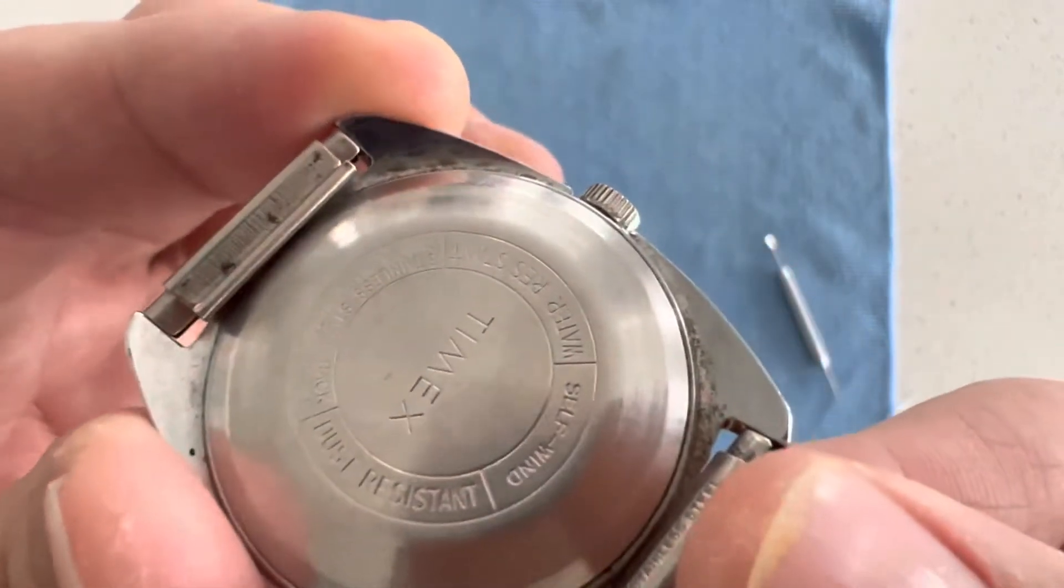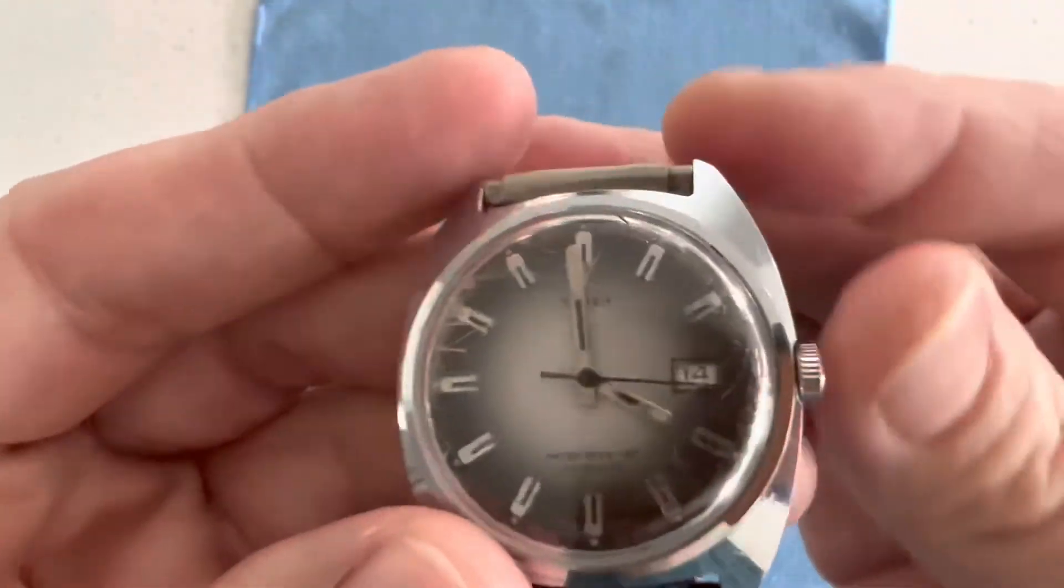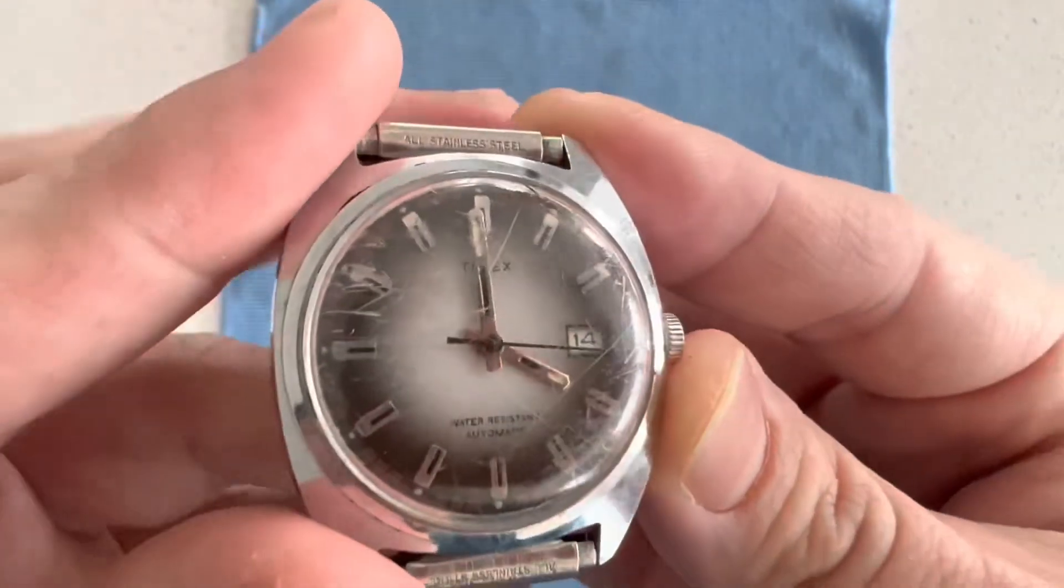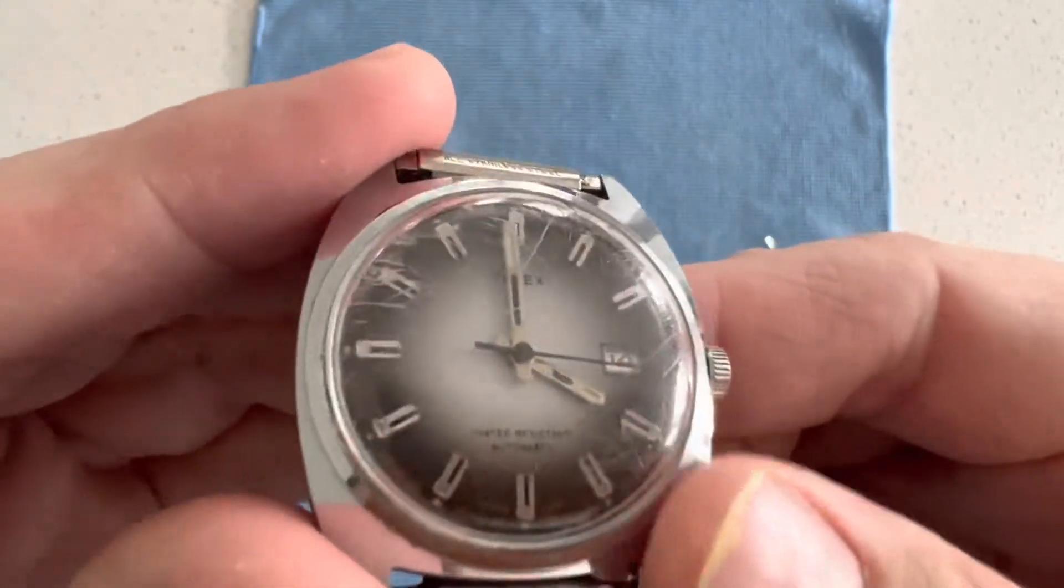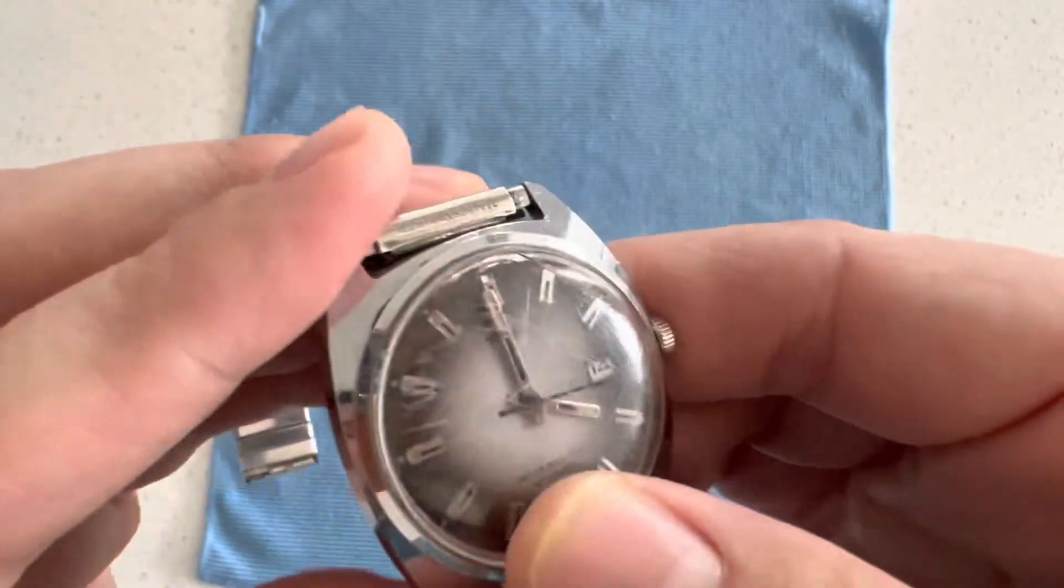We are going to try and remove a lot of that gunk. Maybe we'll be able to do something about the crystal. We may try to polish this out. I think a lot of this will, but some of these scratches look like they're pretty deep and I might not be successful in getting this to be nice and crystal clear.